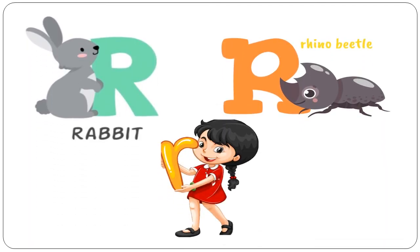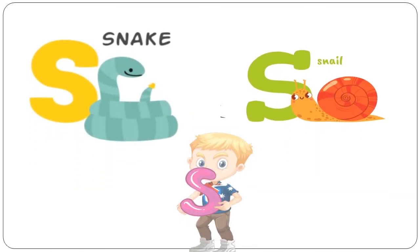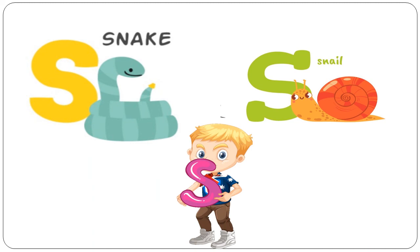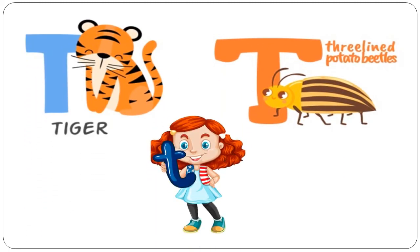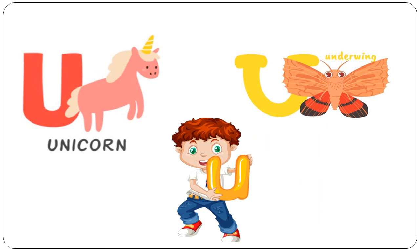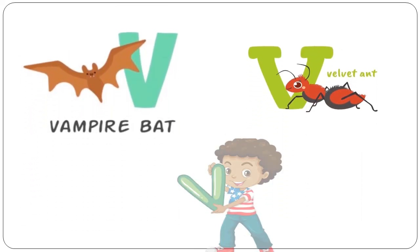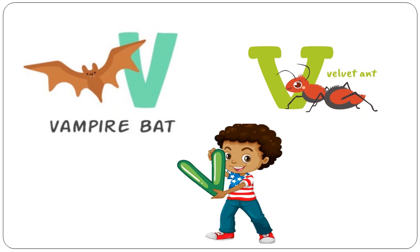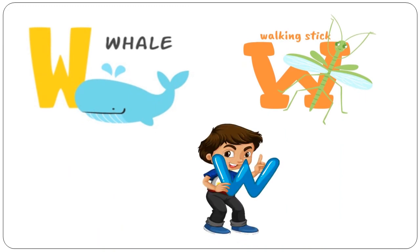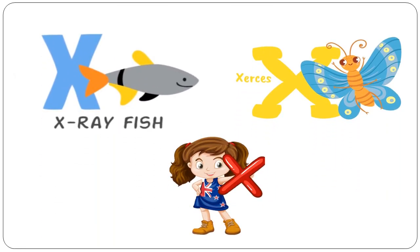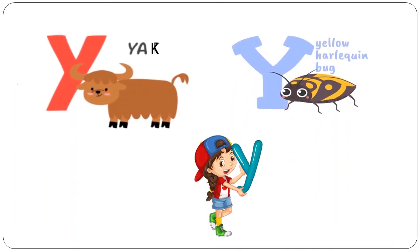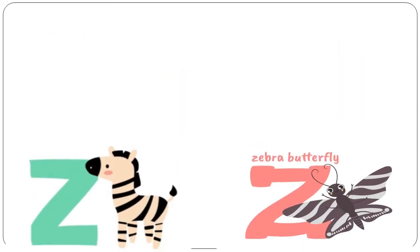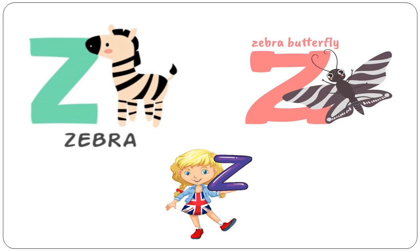R is for Rabbit. R is for Rhino Beetle. S is for Snake. S is for Snail. T is for Tiger. T is for Threeland Potato Beetle. U is for Unicorn. U is for Underwing. V is for Vampire Bat. V is for Velvet Ant. W is for Whale. W is for Walking Stick. X is for X-Ray Fish. X is for Xerxes. Y is for Yak. Y is for Yellow Harlequin Bug. Z is for Zebra. Z is for Zebra Butterfly.